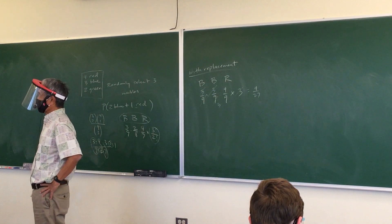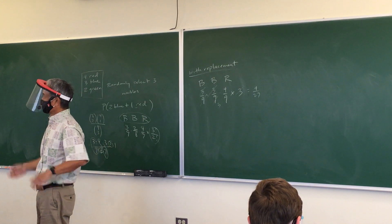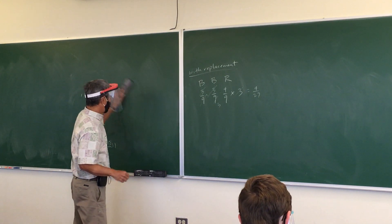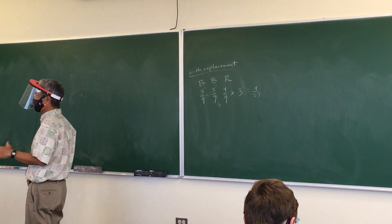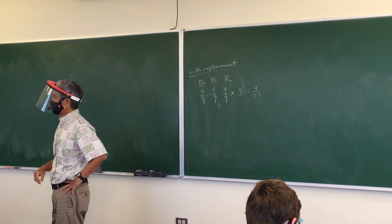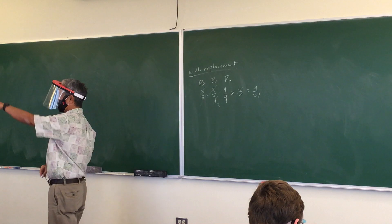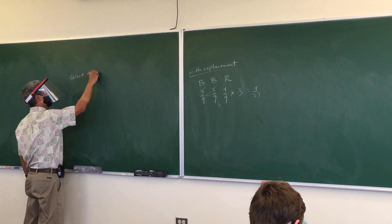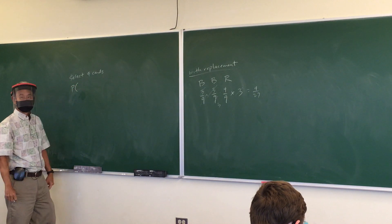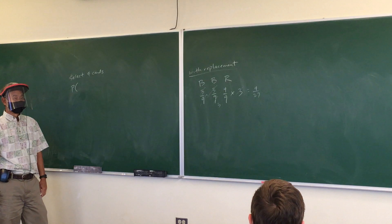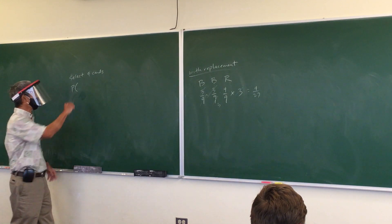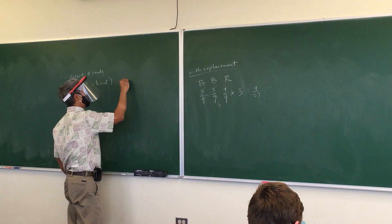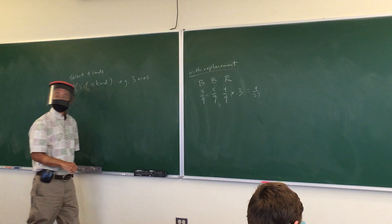There are card problems too. Let's do a card problem. From a standard deck of 52 cards, we're going to randomly select four cards. What's the probability of getting three of a kind? For example, three aces. Cards are typically combination problems, so let's try that method first.